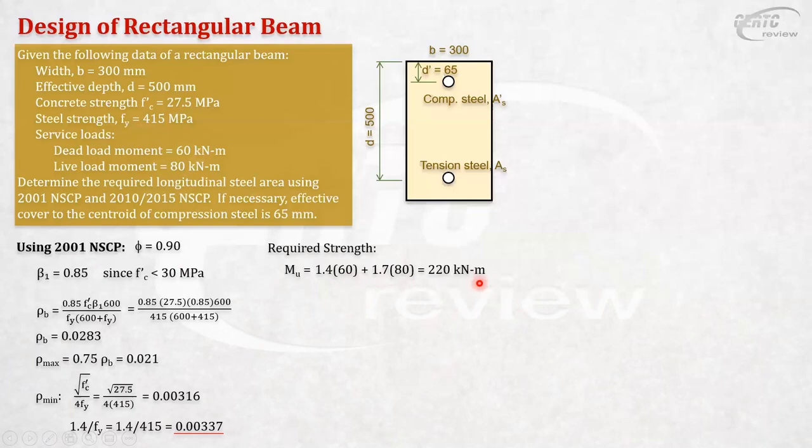Okay. Now, we don't know yet if this is singly or doubly reinforced. That's the problem there. So, what will we do? There are two ways to do this. We can compute the Mu, the design strength, maximum design strength if it's singly. But it will take long steps. Another is, we can assume this beam to be singly reinforced.